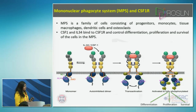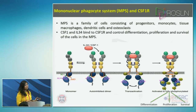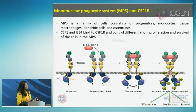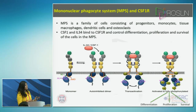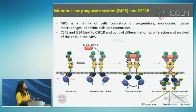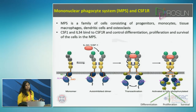Any abnormality in these cells brings about chronic inflammation. Basically, these cells are responsible for maintaining homeostasis and development in an organism. So we see that these three molecules are very critical in the survival of the whole immune response.